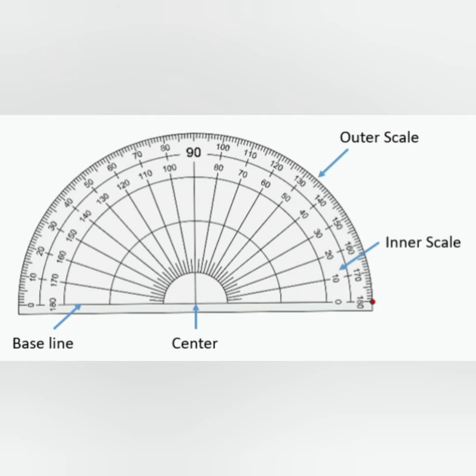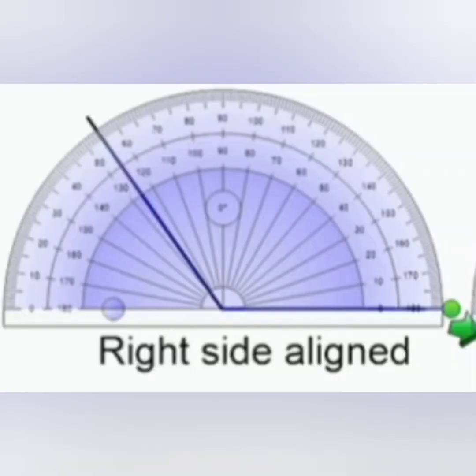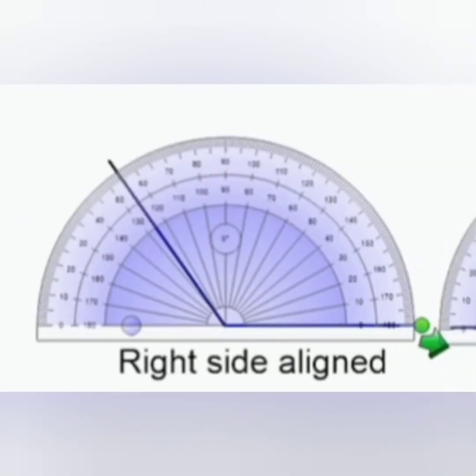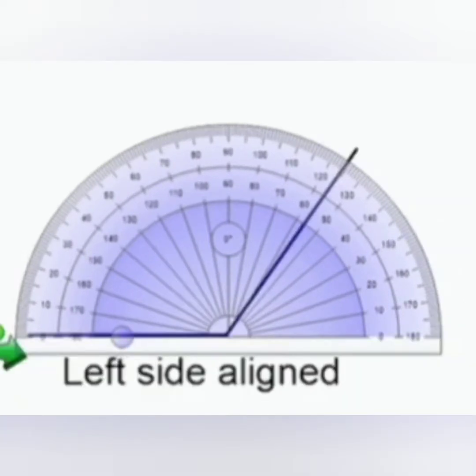How to measure these angles? If the angle is right side aligned, measure using the inner scale. And if the angle is left side aligned, measure using the outer scale.